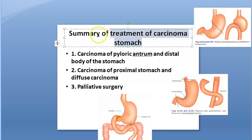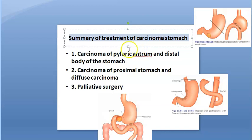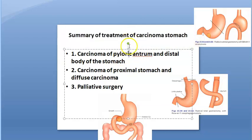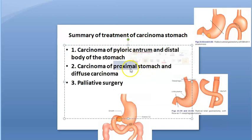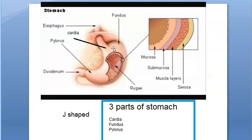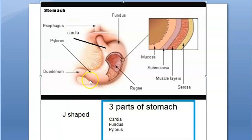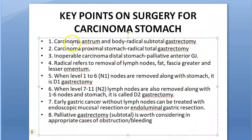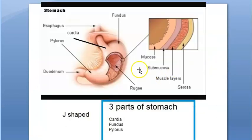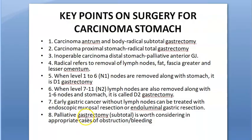The treatment of stomach carcinoma — a quick summary. Whether it is the pyloric antrum and distal body of the stomach, we start with the distal, then the proximal, then palliative surgery. The antrum is the same as pyloric antrum. Below the body is the antrum. So if it is carcinoma of the antrum and body, we do radical subtotal gastrectomy.